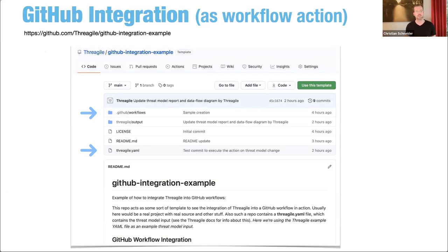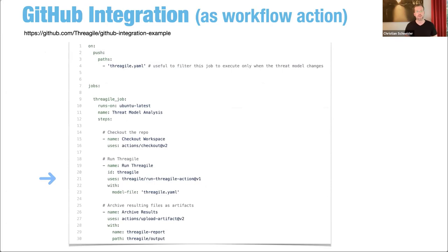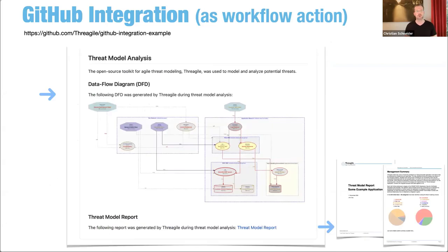If you're using GitHub, there's an official Threagile GitHub Action available, shown as an example in the repo for CI/CD integration. Every time a Threagile model gets pushed to the repo, the Threagile action executes and runs on that model, generates results and reports, and you can even auto-update the repository page or otherwise process the results.